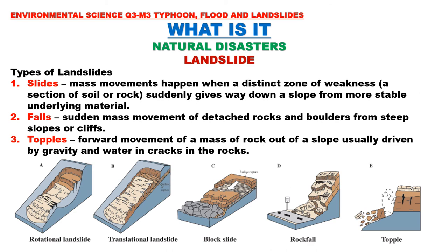Starting with slides: mass movements happen when a distinct zone of weakness — a section of soil or rock — suddenly gives way down a slope from more stable underlying material. Types of slides include rotational landslide, translational landslide, and block slide.